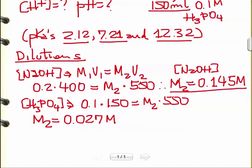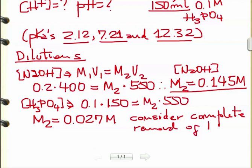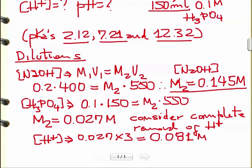Now we have 0.145 molar NaOH and 0.027 molar phosphoric acid. But remember that phosphoric acid has three protons. Let's first consider complete removal of all protons from phosphoric acid. In that case, all the protons available would be 0.027 times three, which gives us 0.081 molar.